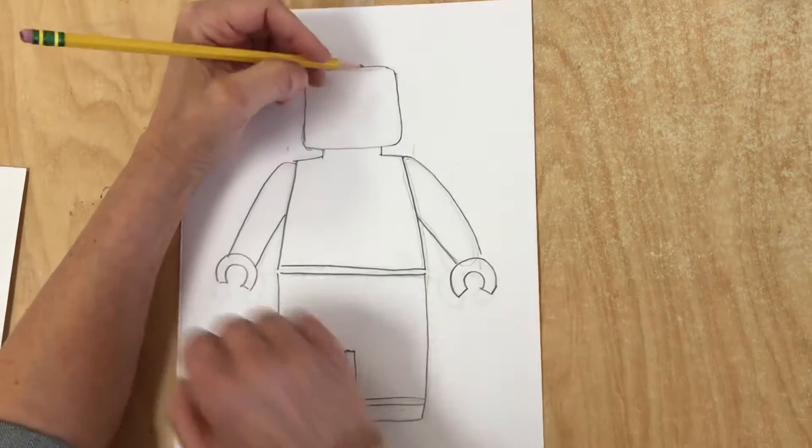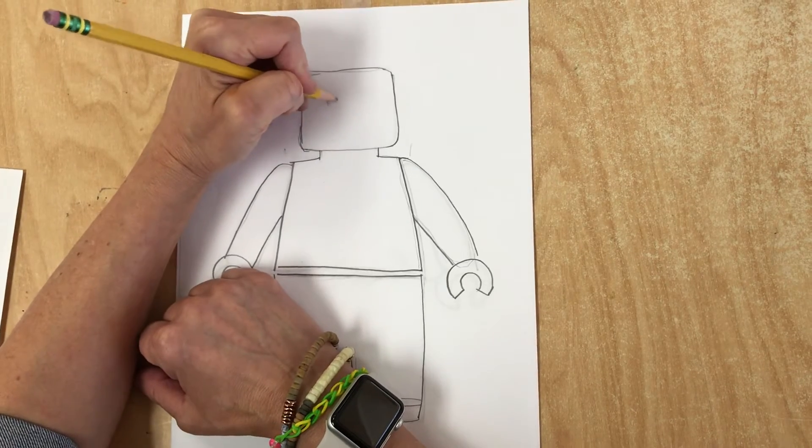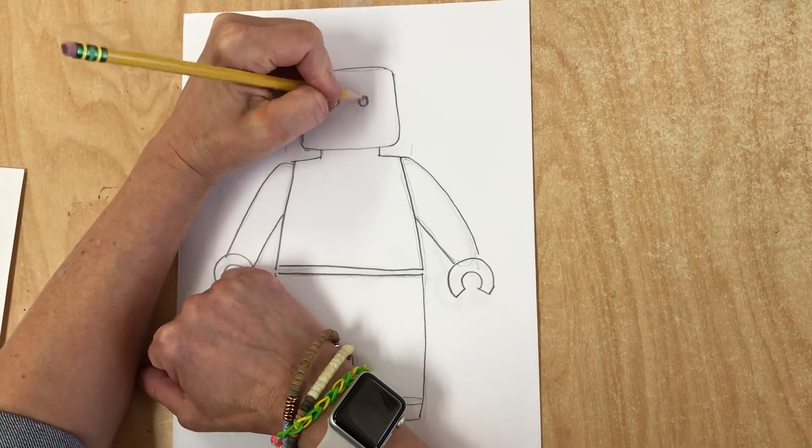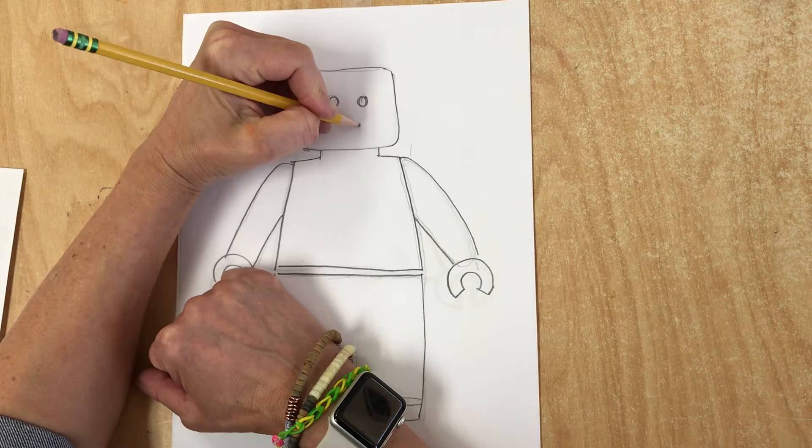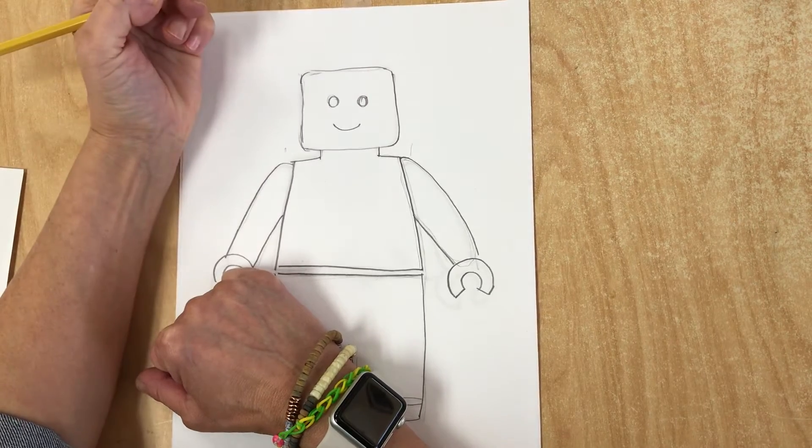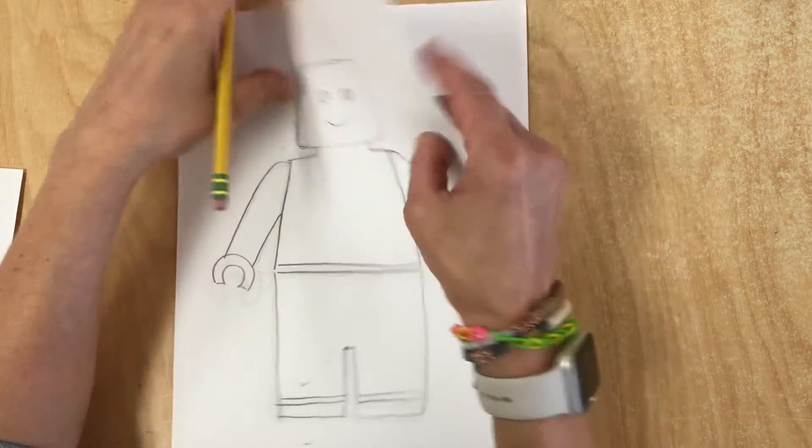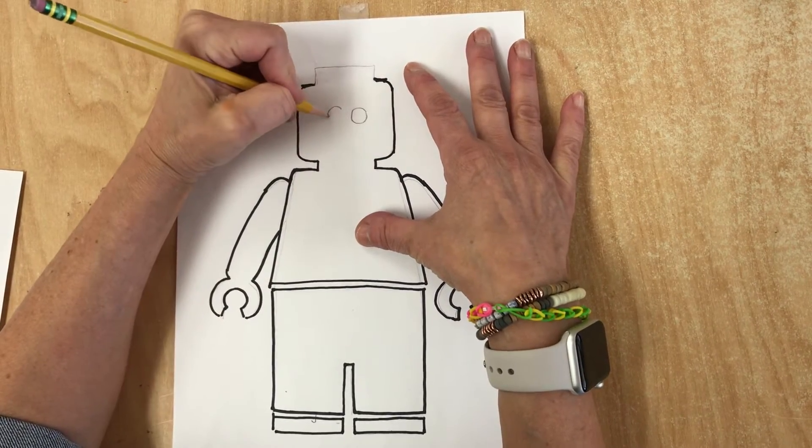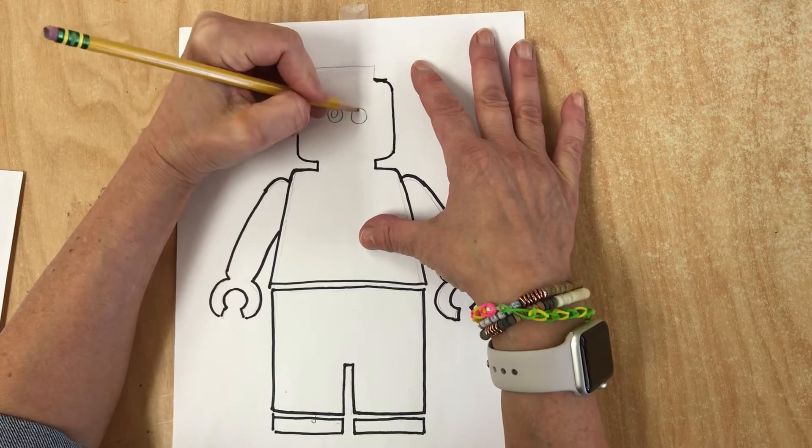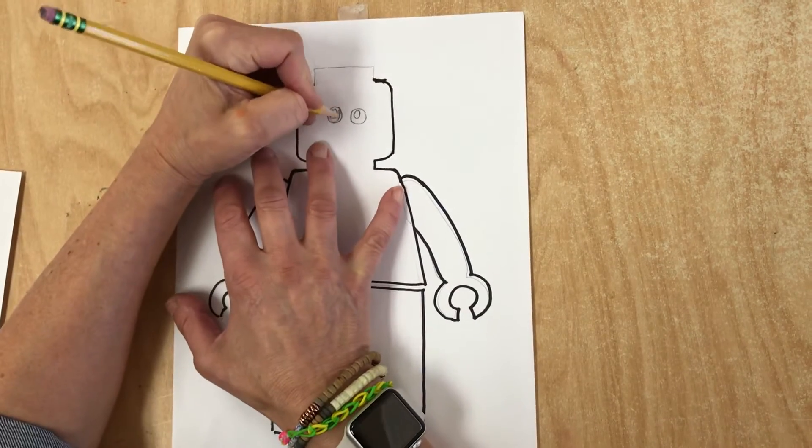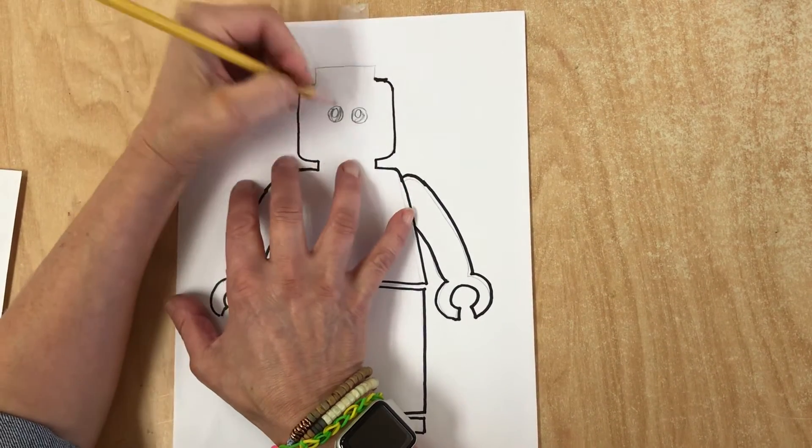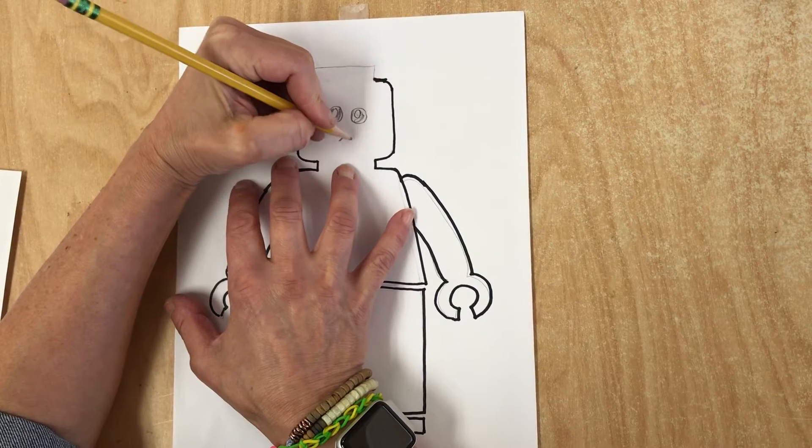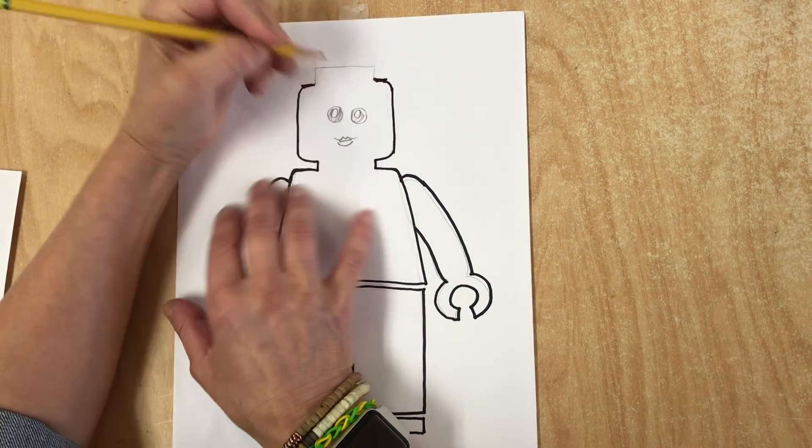And the basic Lego face is circle eyes and a simple mouth, or you can make the kind of eyes that have a shine in them, so you would leave some part not colored in when you do it. You can also make different kinds of lips. There is a sheet that shows you all different kinds of faces.